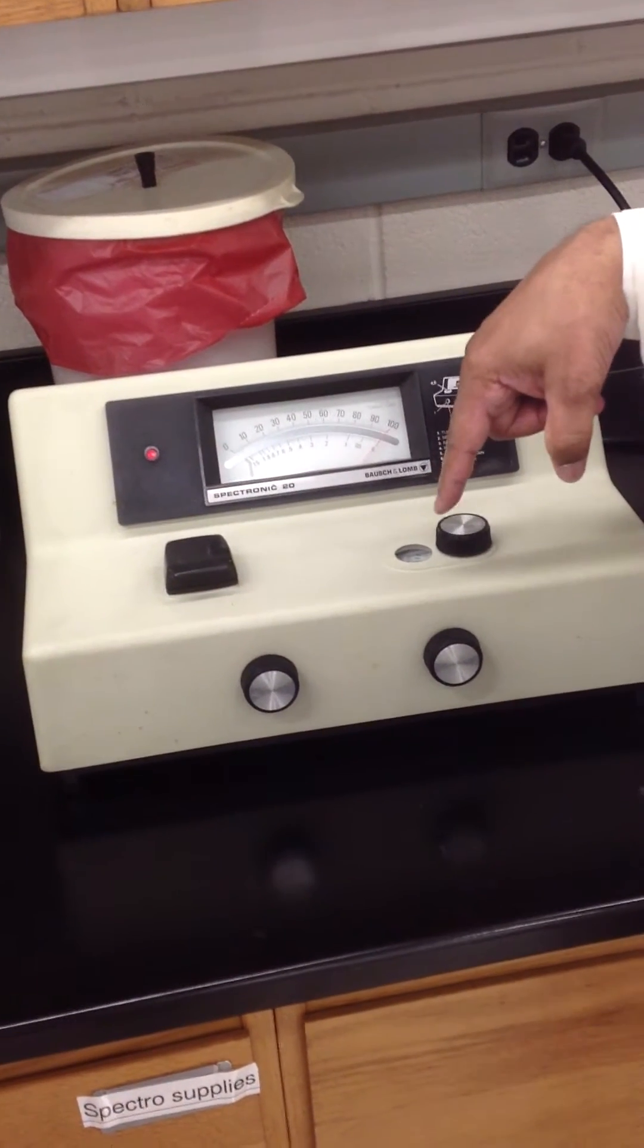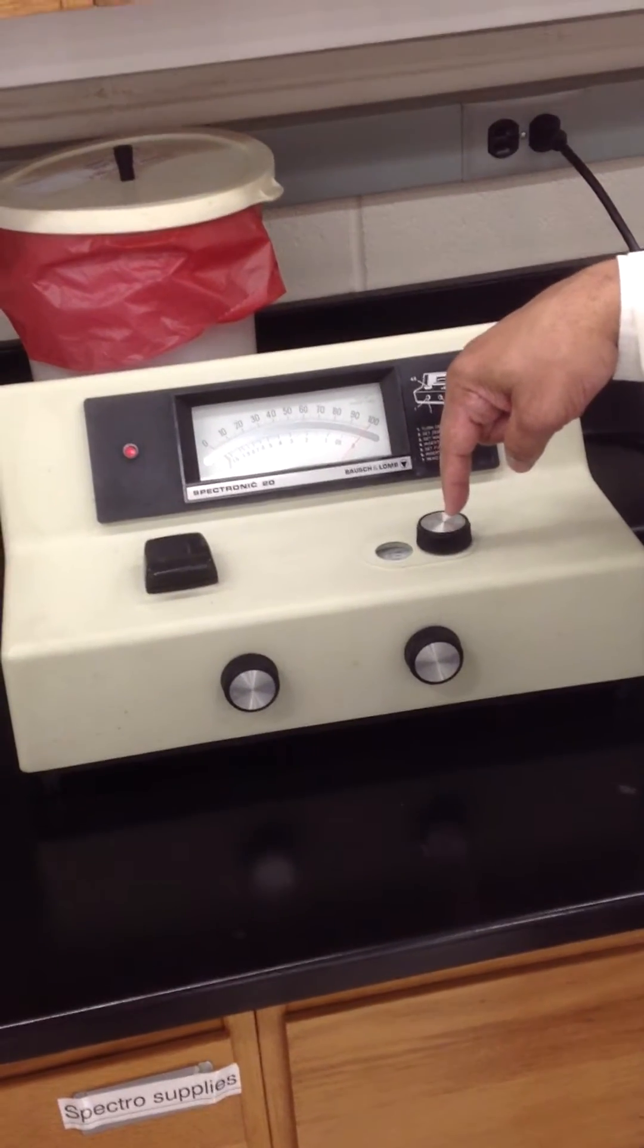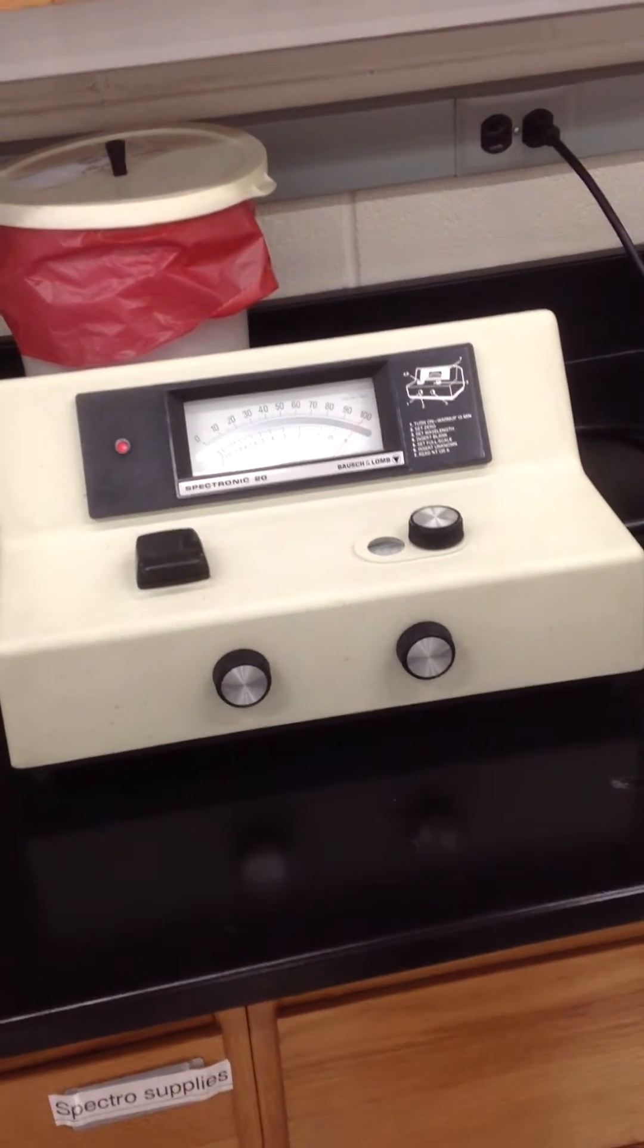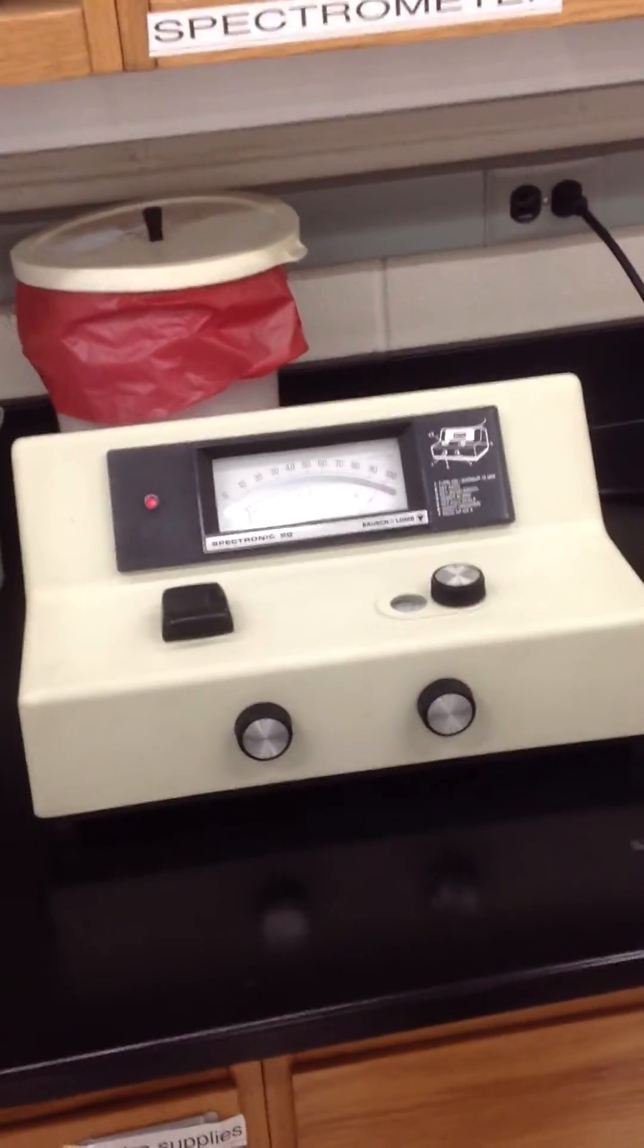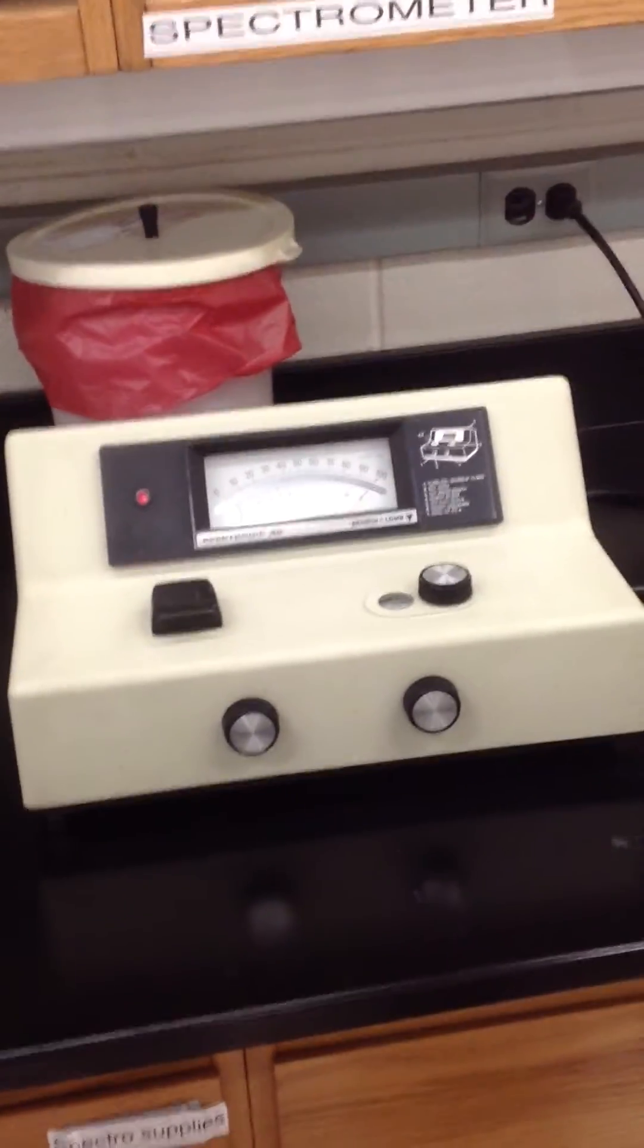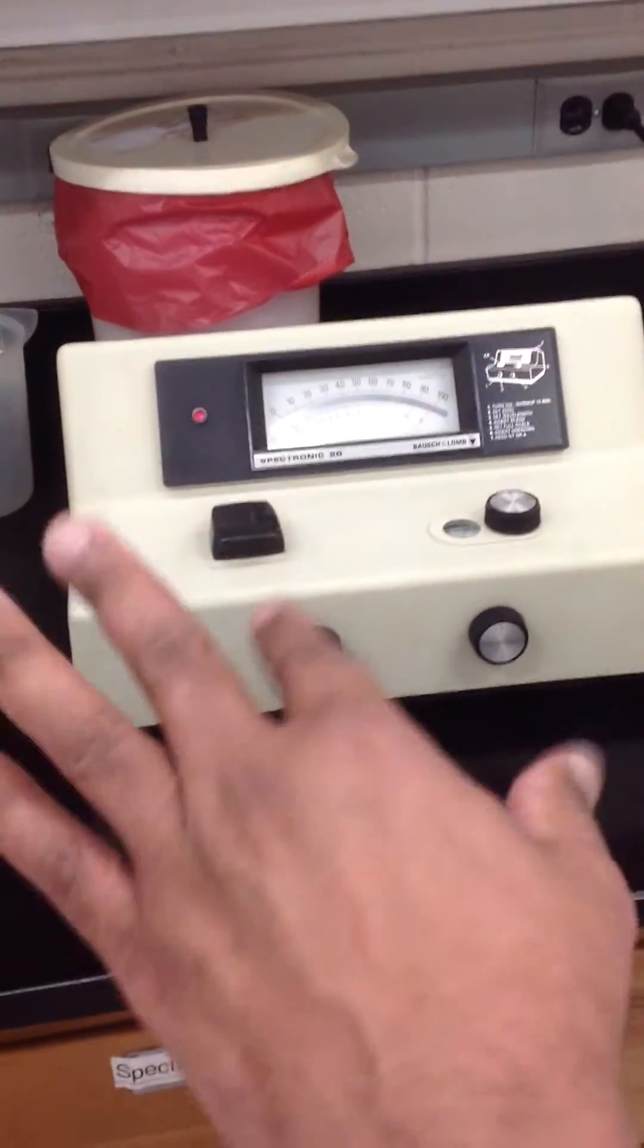Of course, the wavelength is 540 we're using for hemoglobin. So this has to be set, that's always 540 for hemoglobin. So it's not always set on 540, but you're going to make sure it's set on 540. But that's our constant 540 when we're doing for hemoglobin only. If we're doing glucose, that's different.